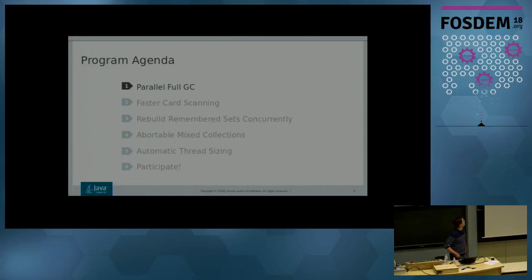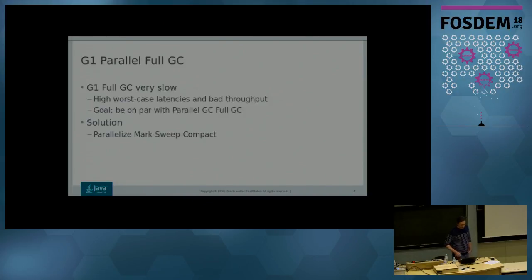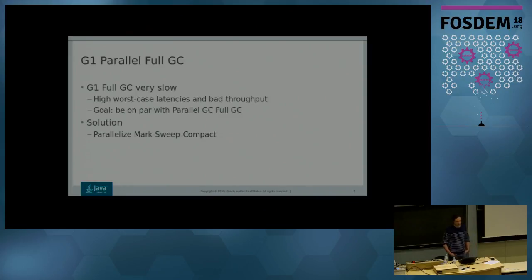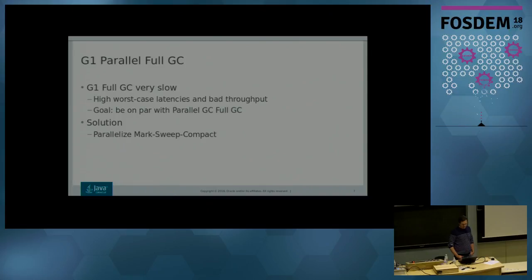First: parallel full GC. There's always been the problem that G1 full GC is very slow — it's serial. G1 has very high worst-case latencies and really bad throughput. So in this change, we tried to make the G1 parallel full GC on par with the parallel GC full GC, and the solution was basically to make it parallel.